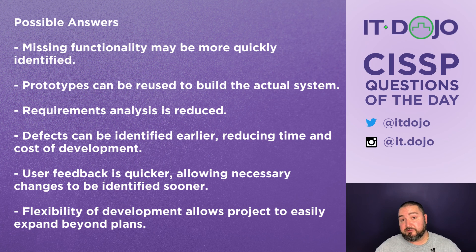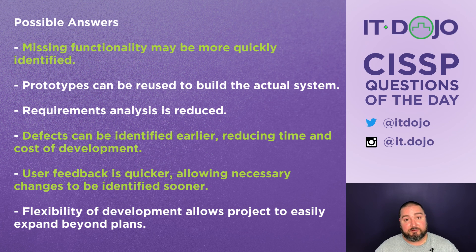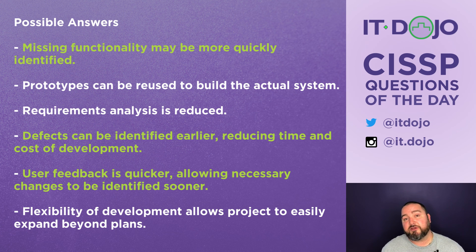Given all that, the best answers are: missing functionality can be more quickly identified; defects can be identified earlier, reducing the time and cost of development; and user feedback is quicker, allowing necessary changes to be identified sooner. That was two questions in the world of software development. If you found these helpful, hit that like button, subscribe to get these questions every day, and I'll see you tomorrow.